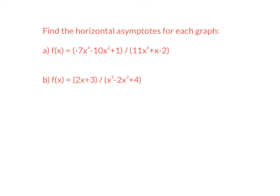Find the horizontal asymptote. Looking at the first terms — the degrees are both degree four, which means my horizontal asymptote is y equals the leading coefficient in my numerator, which is negative seven, over the leading coefficient in my denominator, which is 11. That's your horizontal asymptote. For the second one, the top is degree one and the bottom is degree three. Because the top degree is less than the bottom degree, it's always y equals zero, which is also the x-axis. And if the top would have been bigger degree, there would be no horizontal asymptote.